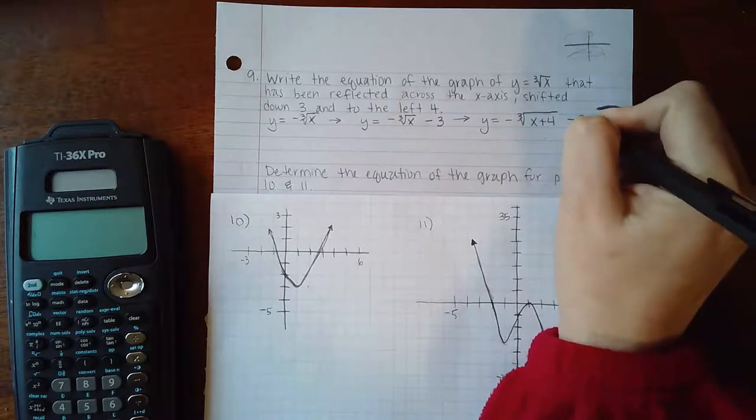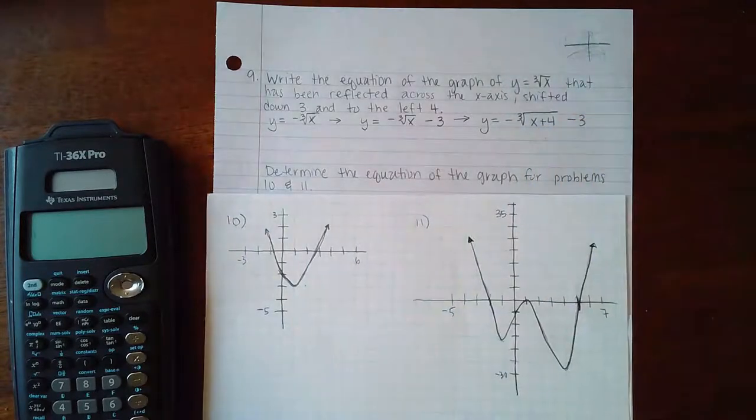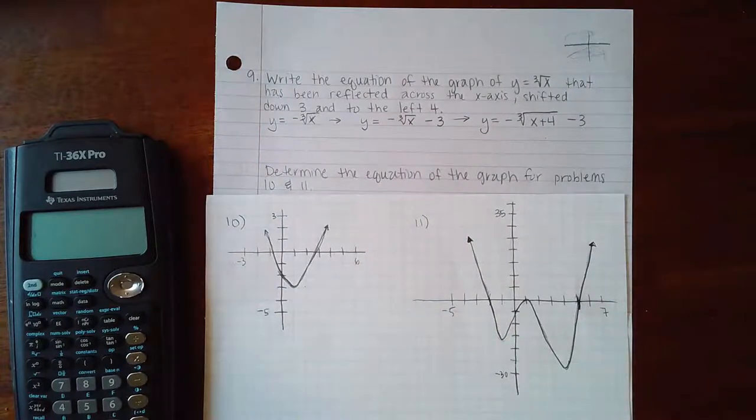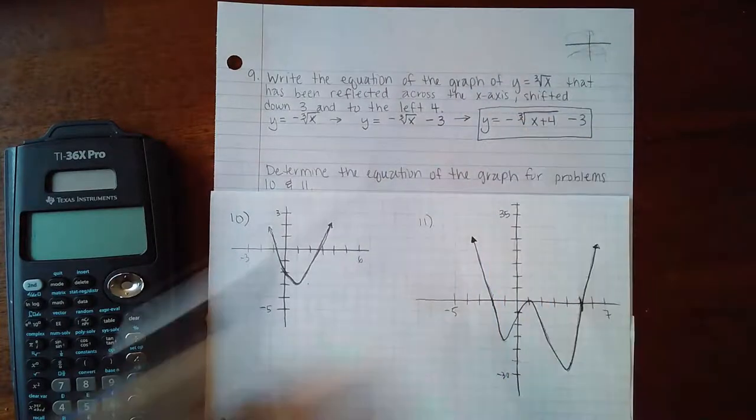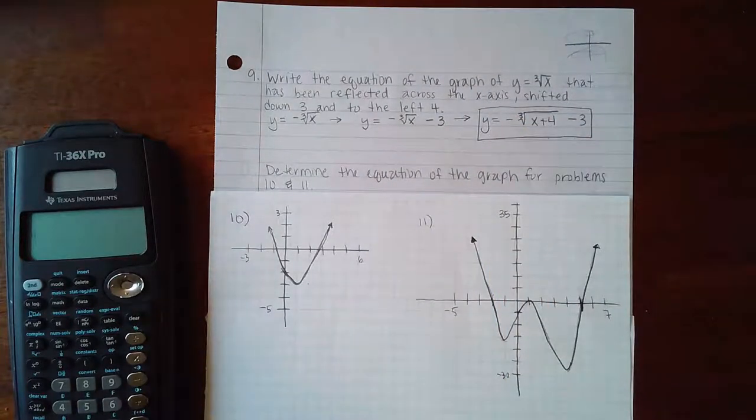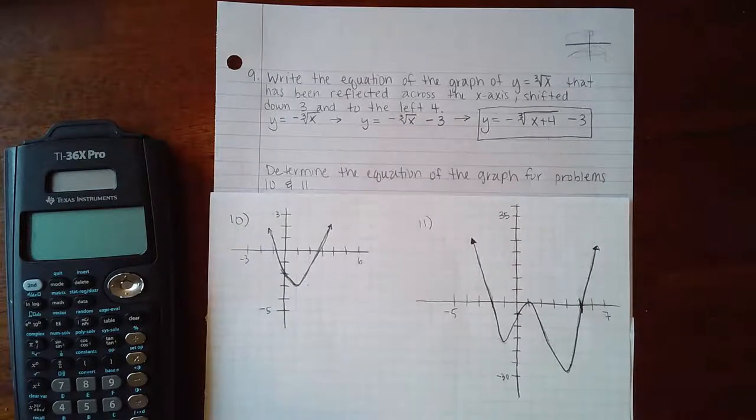Even though I'm moving to the left toward the negative direction, I'm actually going to add 4 inside of that radical. That's the only kind of transformation that requires us to do the opposite of what was intended. Even though it's going left toward the negatives, you actually add 4 to make it go left, and this would be the resulting equation.